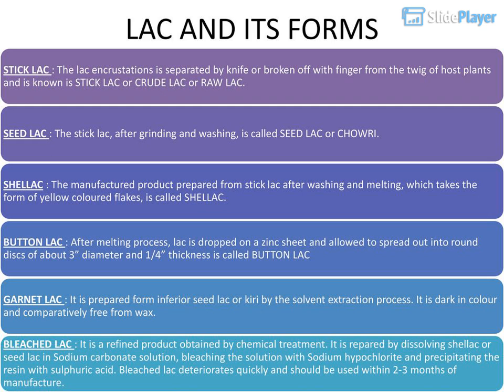Button lac — after the melting process, lac is dropped on a zinc sheet and allowed to spread out into round discs of about 3 inches diameter and one-quarter inch thickness, called button lac. Garnet lac — prepared from inferior seed lac or curie by the solvent extraction process; it is dark in color and comparatively free from wax. Bleached lac — a refined product obtained by chemical treatment, prepared by dissolving shellac or seed lac in sodium carbonate solution, bleaching with sodium hypochlorite, and precipitating the resin with sulfuric acid. Bleached lac deteriorates quickly and should be used within 2 to 3 months of manufacture.